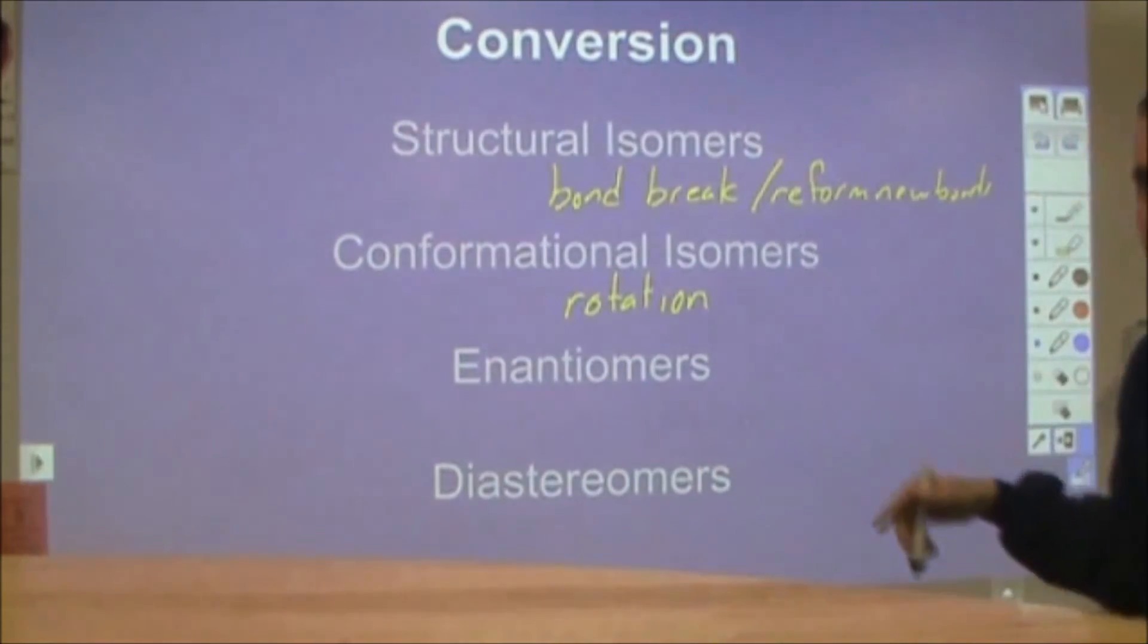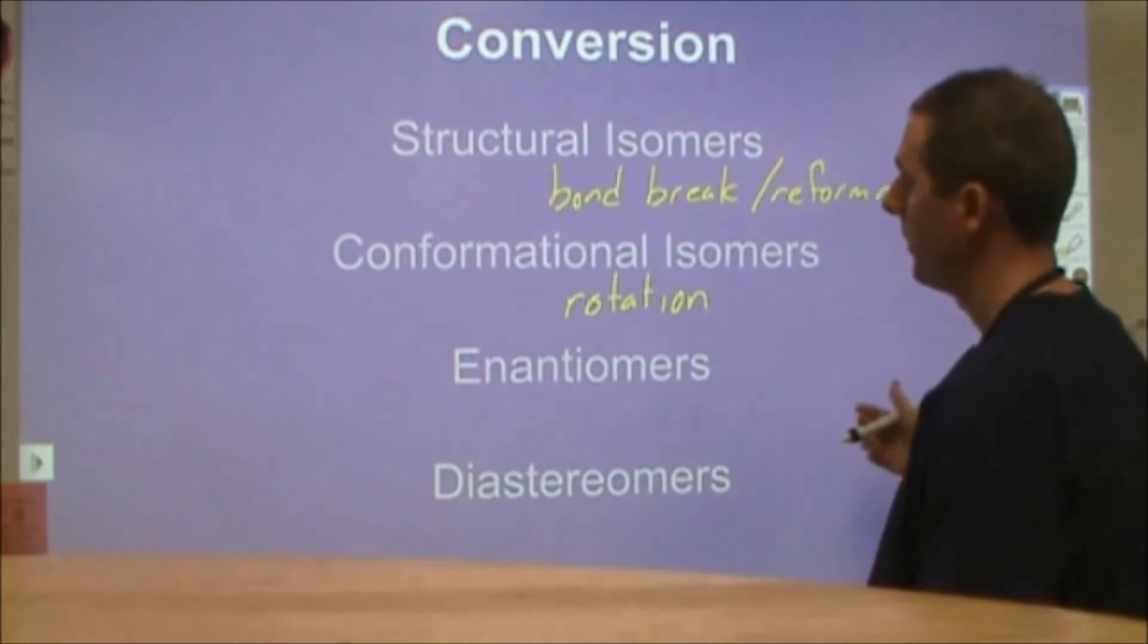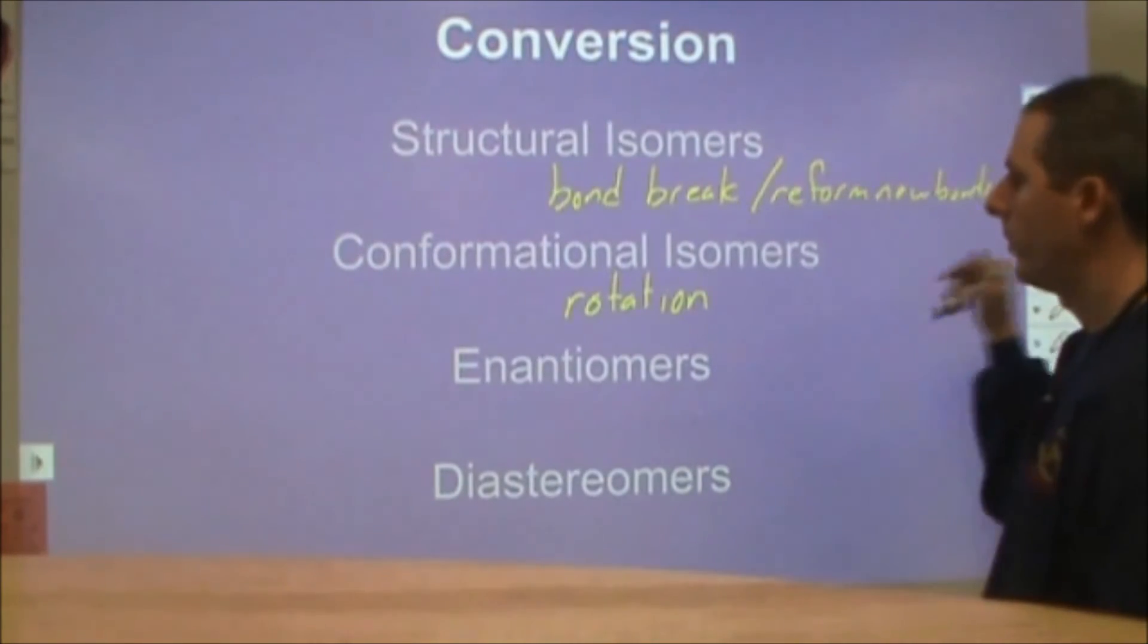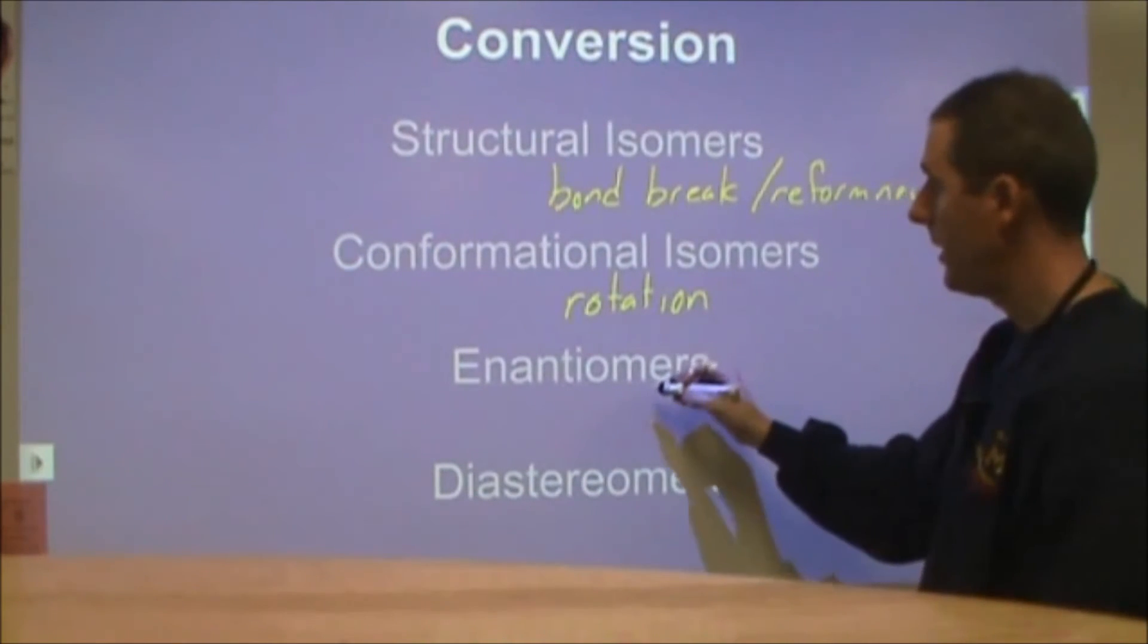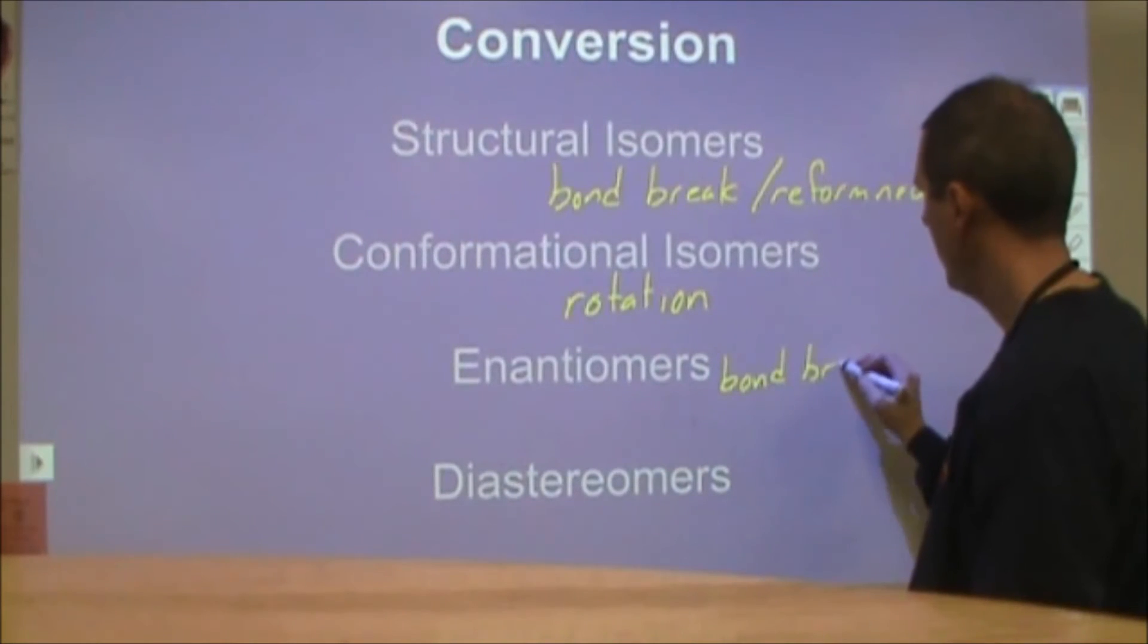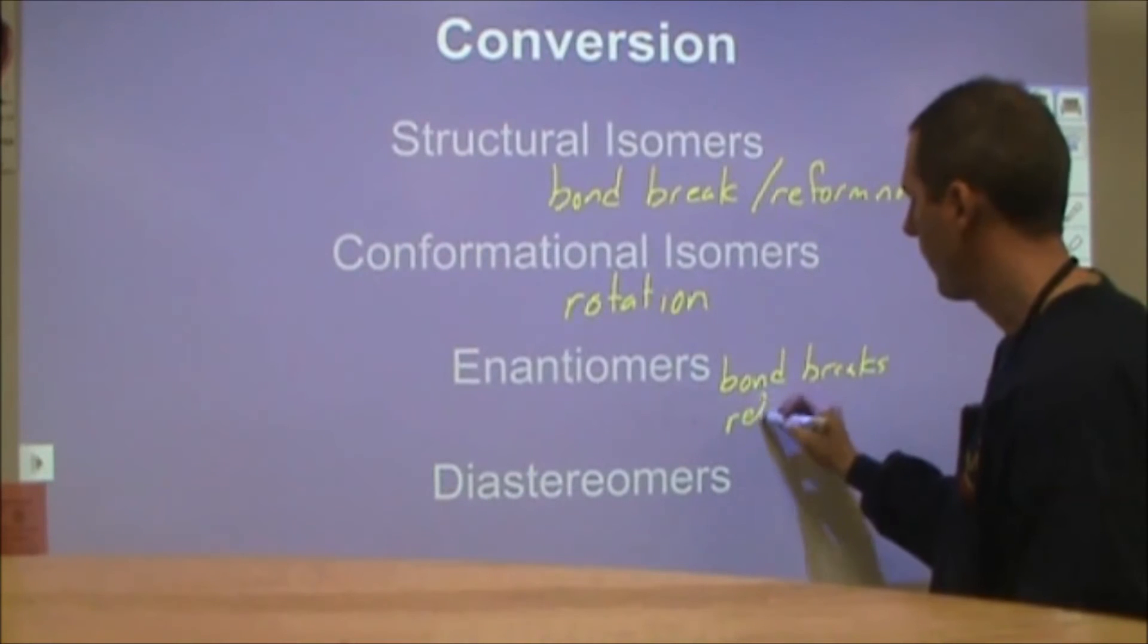And so here we can get into the fact that infrared light might spur rotation and then we'll end up with a conformational isomer. And that can be useful in spectroscopy where we can do infrared spectroscopy to detect what type of molecule we have. In enantiomers, you actually do need to break bonds in order to convert from R to S or something along those lines and then reform a new bond.